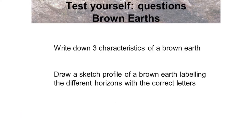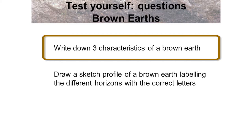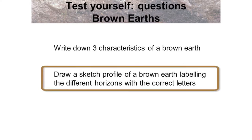Why don't you test yourself about brown earth soils? Write down three characteristics of a brown earth — think about colour, organic matter, organisms, drainage, climate and location. Then draw a sketch profile of a brown earth soil labelling the three main horizons with the correct letters. Go back to slide four to see if you're correct.